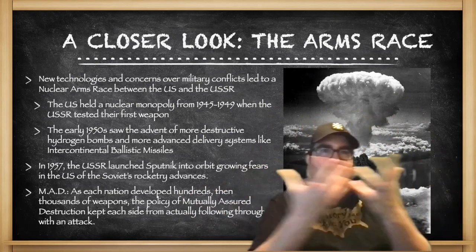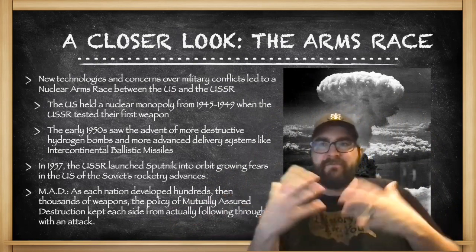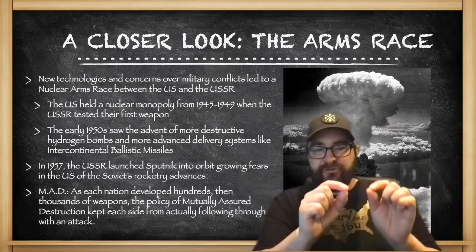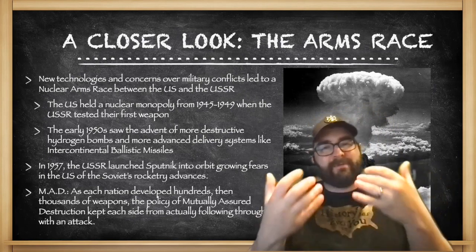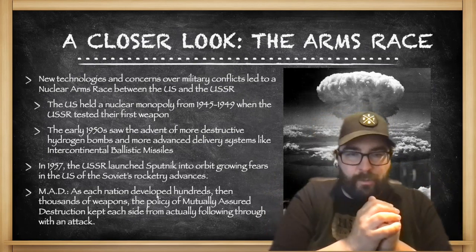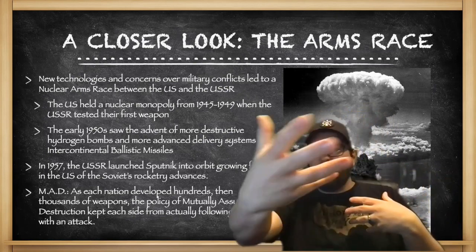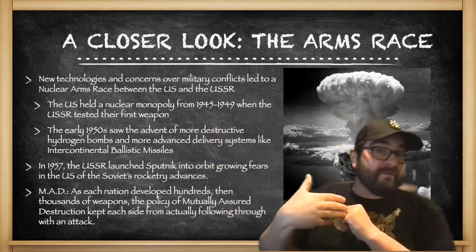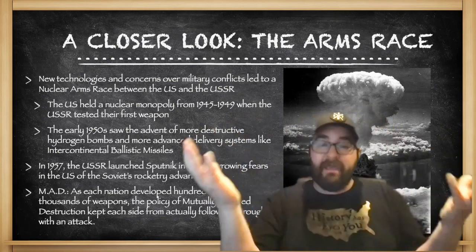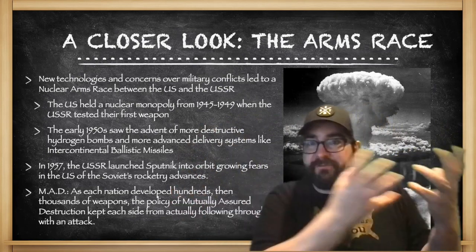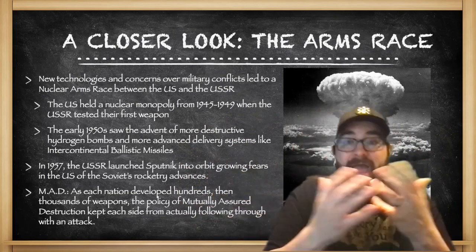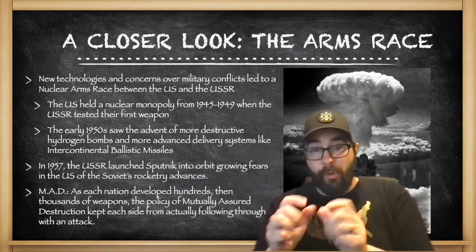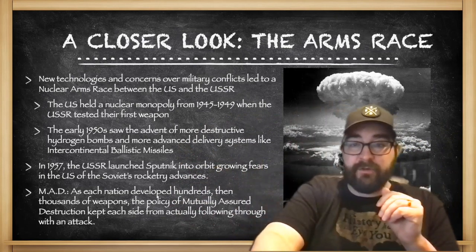By the 1960s, as both the United States and the Soviet Union possessed enough weapons to destroy the world many times over, the policy of MAD — Mutually Assured Destruction — kept both sides from using their weapons. Mutually Assured Destruction meant that if the U.S. ever launched an attack against the Soviets, they would respond and everybody would be destroyed, and vice versa. This ultimately kept anyone from using these weapons, though the threat of nuclear war would persist all the way to the end of the Cold War.